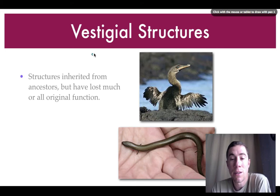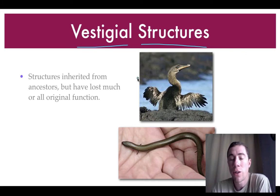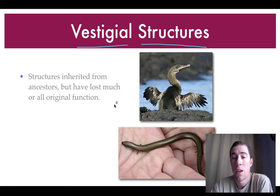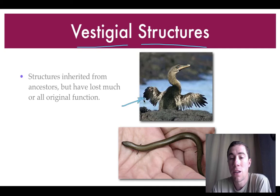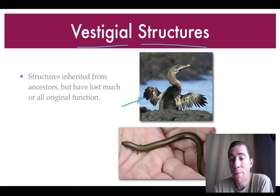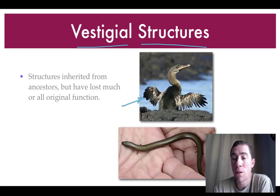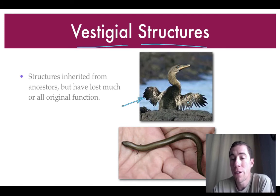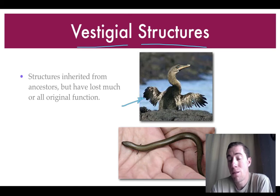Another term that supports evolution is vestigial structures — structures inherited from ancestors that have lost their actual function. This picture is of a flightless cormorant. Other cormorants in the world can fly, but these cormorants made their way to the Galapagos Islands and over time stopped flying, instead swimming in the ocean to find food. Since they no longer used their wings for flying, over many generations the wings were passed down but lost their function — these birds can no longer fly.